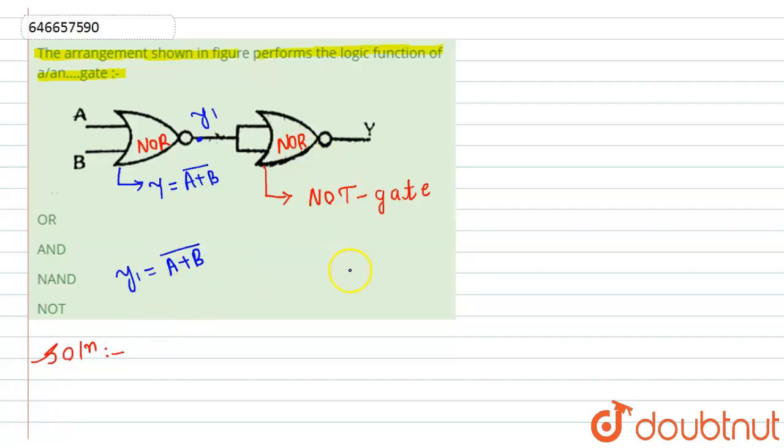Now we know that for NOT gate the boolean expression is given by y = a bar. That means according to here this y will become = y1 bar, that is = (a + b bar) raised to bar. Now if we see here, if any input has bar raised to bar, this will become = a + b.